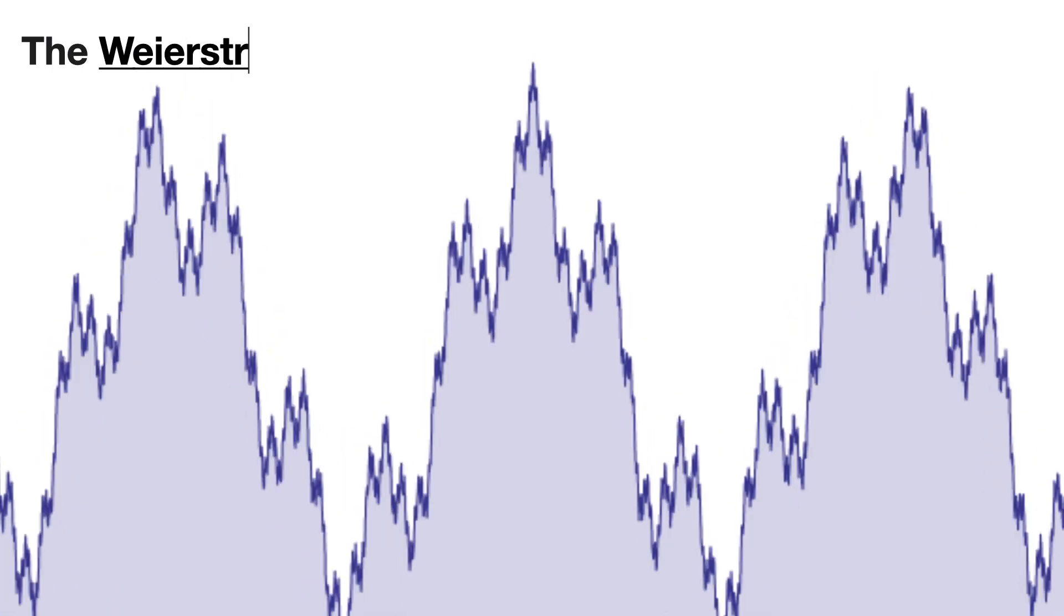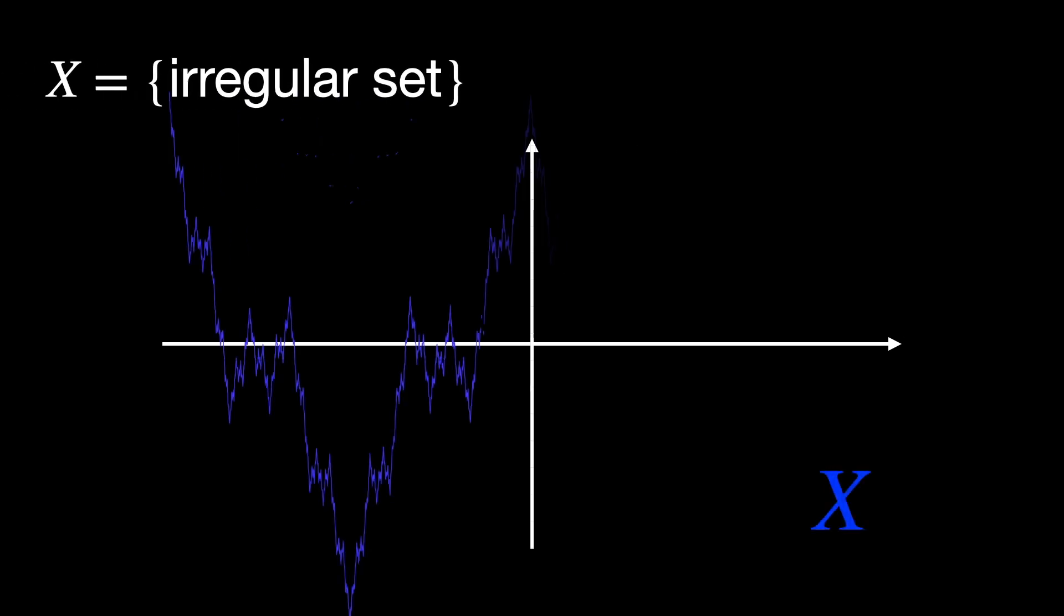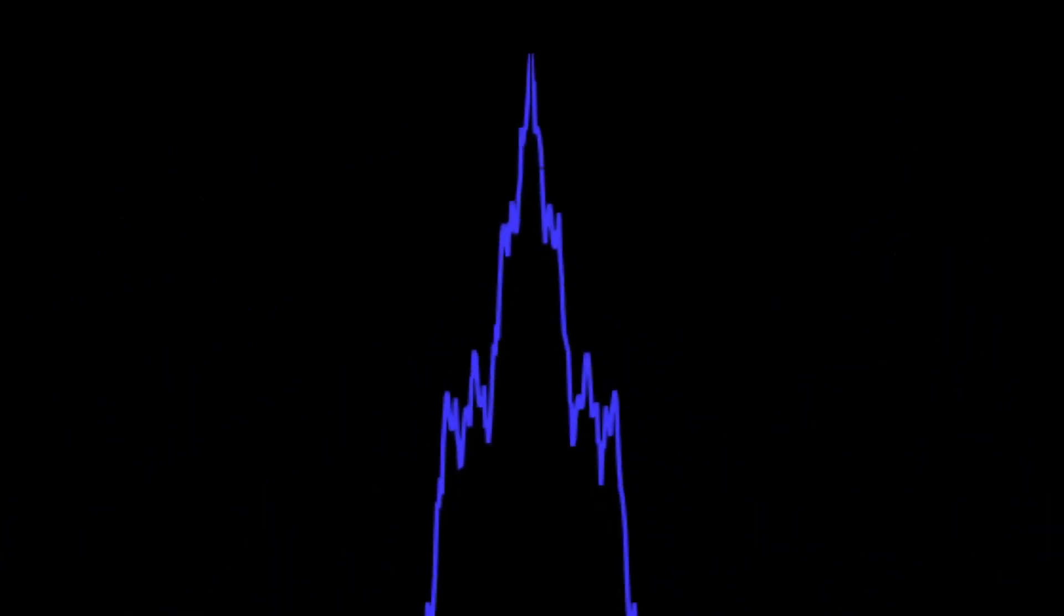A problem can arise with that definition of dimension when we construct a pathological set X that acts as a barrier between any two points in a plane, but contains no segment of any curve. A pathological set is a set with strange counter intuitive properties that challenge our usual geometric intuition. For example, imagine a set X that is so irregular that it acts as a barrier between any two points in the plane or 2, meaning no continuous path can connect the points without passing through X.